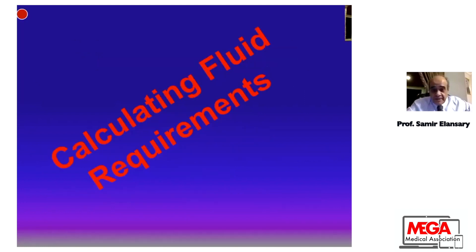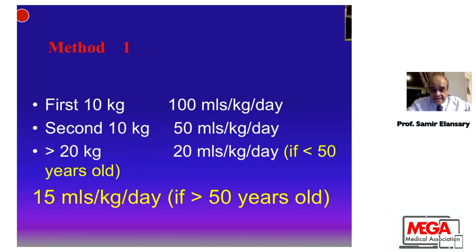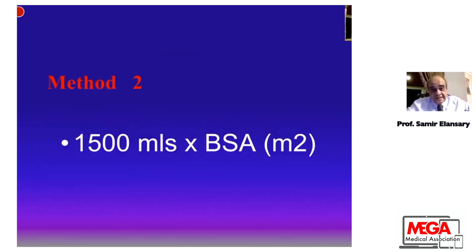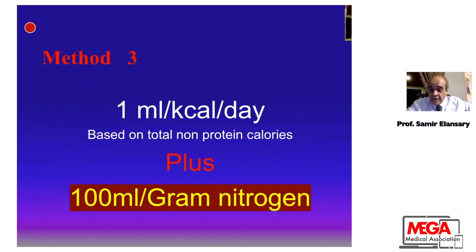Fluid requirement calculations: first 10 kg — 100 mL per kg per day; second 10 kg — 50 mL per kg per day; above 20 kg — 20 mL per kg per day if under 50 years old, or 15 mL per kg per day if over 50 years old. Second method: body surface area × 1500. Third method: 1 mL per kilocalorie per day based on total non-protein calories, plus 100 mL per gram nitrogen.